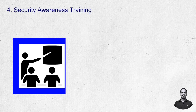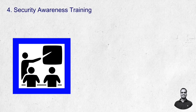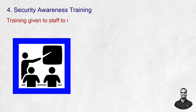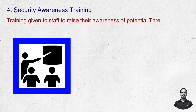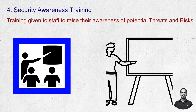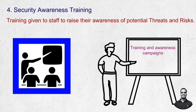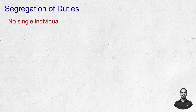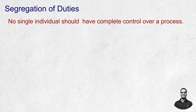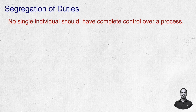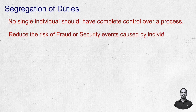Security awareness training is also an example of preventive controls. Training given to employees to raise their awareness and understanding of potential security threats and risks, as well as best practices for protecting against them, will help prevent incidents. Segregation of duties is another preventive control which ensures that no single individual has complete control over a process, reducing the risk of fraud or security events.